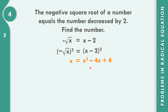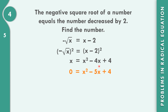x times x is x squared. x times negative 2 times 2 gives negative 4x. Negative 2 times negative 2 is positive 4. Let us combine like terms. On the left side that is 0. So x squared, combining negative 4x and negative x going to the right side gives negative 5x, and bring down positive 4. So x squared minus 5x plus 4 is equal to 0.